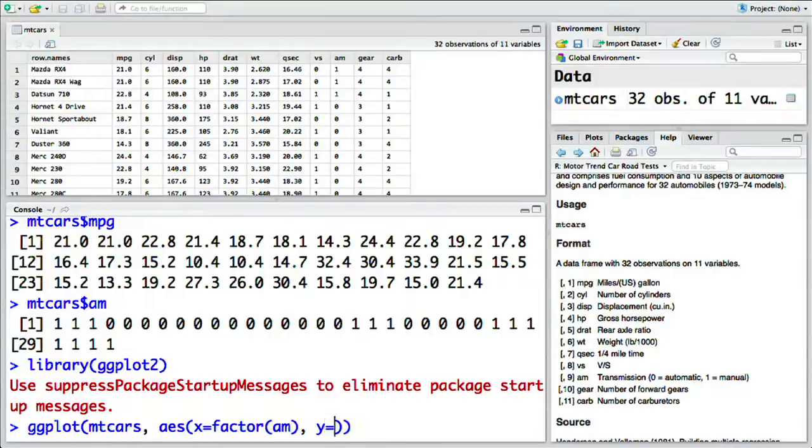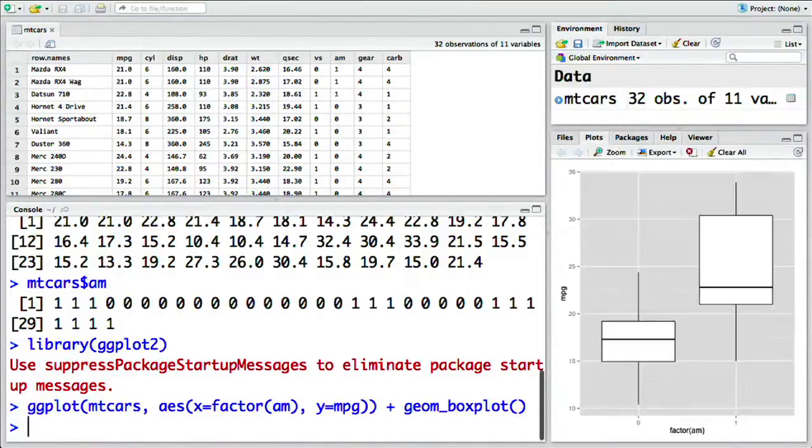On the y-axis, we put miles per gallon. Then we put the type of box plot, which in this case is geom underscore boxplot, open close parentheses, to create the plot.